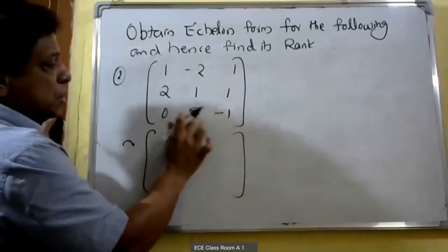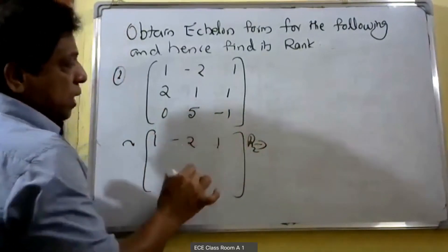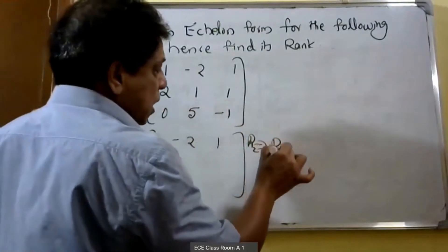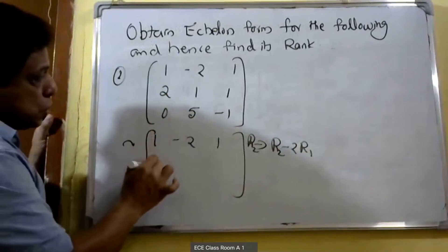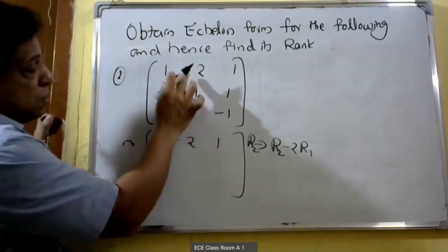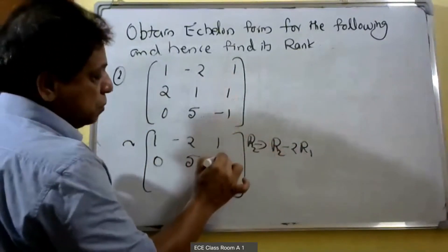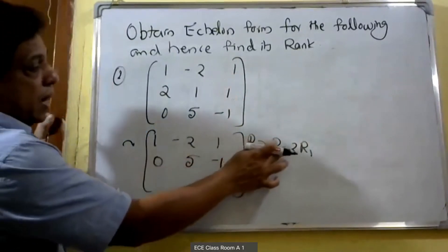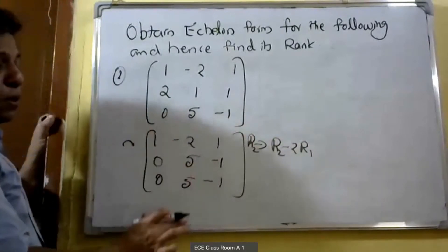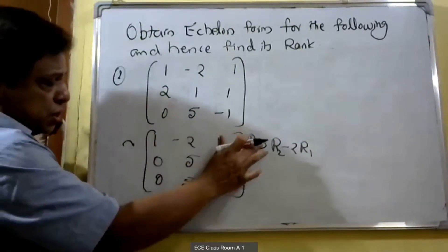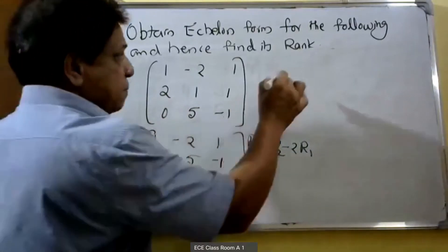This is the first row, second row, third row. R2 changes to R2 minus 2R1: 2 minus 2 equals 0, 1 minus minus 4 equals 5, 1 minus 2 equals minus 1. Row 3 remains: 0, 5, minus 1. The first step is complete with the first non-zero element of R1 being 1.